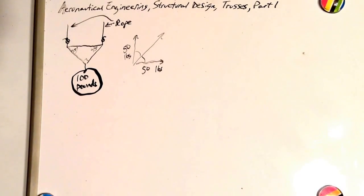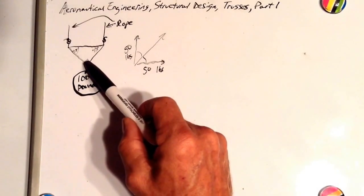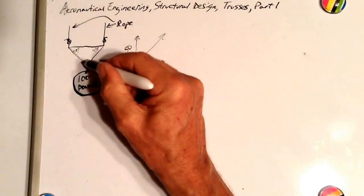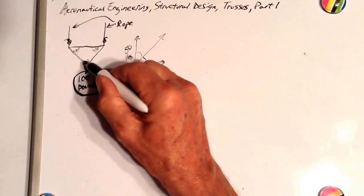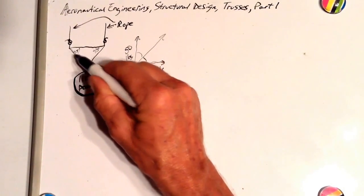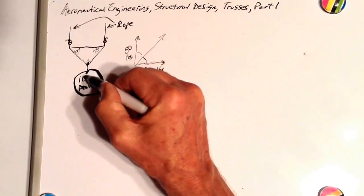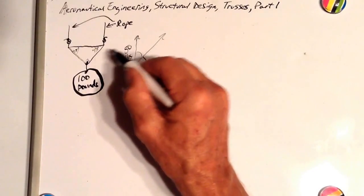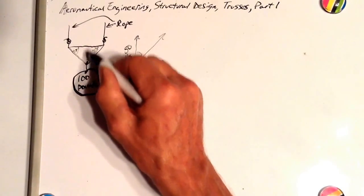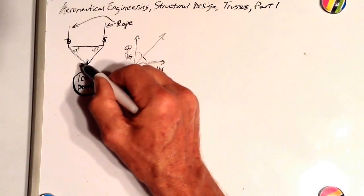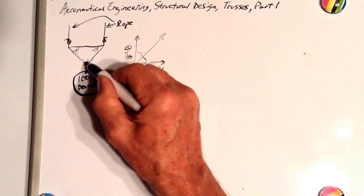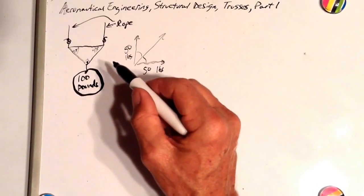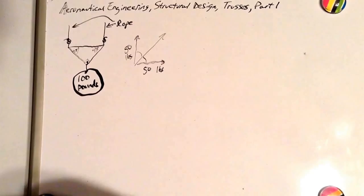The bottom line is that all the forces acting on this point add up to zero. This pull is an upward pull and a sideward pull. This other pull is an upward pull and a pull to the left, and the 100 pound weight is pulling down. So: 50 pounds to the right and 50 up; 50 to the left and 50 up. The 50 left cancels the 50 right; the 50 up plus 50 up equals the 100 down. Vertical components add to zero; horizontal components add to zero.